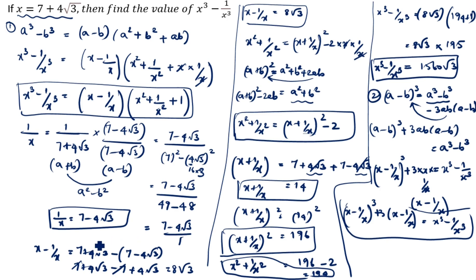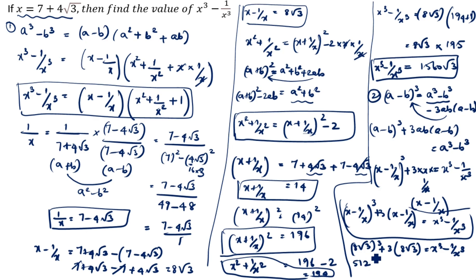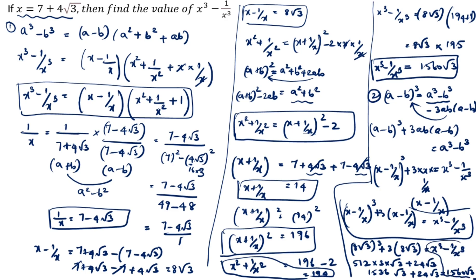x minus 1 by x is 8 root 3. So x cube minus 1 by x cube equals (8 root 3) whole cube plus 3 into 8 root 3. Now (8 root 3) cube: 8 cubed is 512, and root 3 cubed is 3 root 3, so 512 into 3 root 3 is 1536 root 3. Plus 3 into 8 root 3 equals 24 root 3. Therefore 1536 root 3 plus 24 root 3 equals 1560 root 3. So x cube minus 1 by x cube equals 1560 root 3. This is the second method.